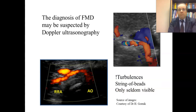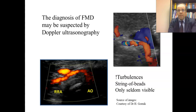The diagnosis of FMD may be suspected by Doppler ultrasonography. Quite suggestive are turbulences in the vessel in the mid to distal part of the artery — for the renal artery, remote from the aorta and near the kidney, which is the usual location of multifocal FMD. Still, this is not absolutely specific and you will not always find it. The renal duplex is difficult and needs a lot of expertise. In some cases you can even see the string of beads, but this is very rare.